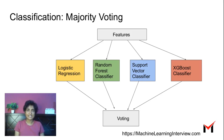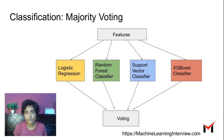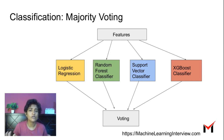Let's take an example. Suppose we have a classification problem and we want to learn four different classifiers: a logistic regression classifier, a random forest classifier, a support vector classifier, and an XGBoost classifier. Each of these might work well for different parts of the data, and we want to combine their outcomes to get a better result.